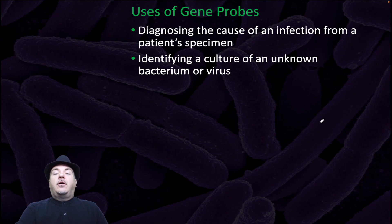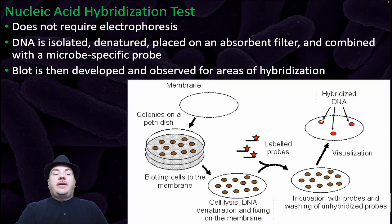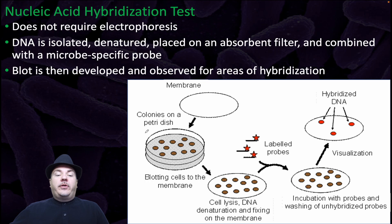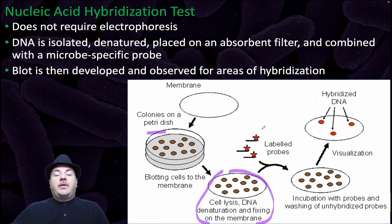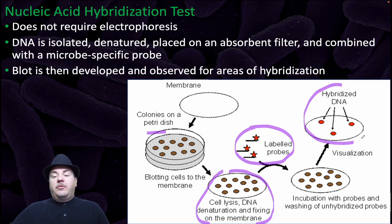What do we use gene probes for? They can be used to diagnose the cause of an infection from a patient specimen and identify a culture of unknown bacteria or virus. In the nucleic acid hybridization test — which does not require electrophoresis — DNA is isolated, denatured, and placed on an absorbent filter and combined with a microbe-specific probe. The blot is then developed and observed for areas of hybridization. For example, with colonies growing on a petri dish, you place a membrane on top to blot the cells. The cells are lysed, DNA is denatured and fixed onto the membrane, and you attach labeled probes for the particular DNA sequence you're looking for. This tells you which colonies have the DNA you're looking for.